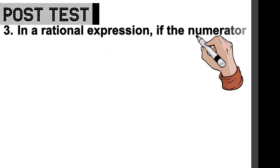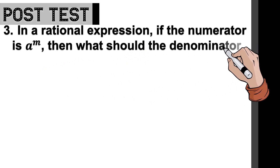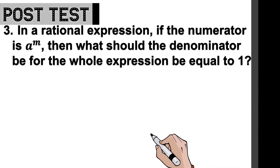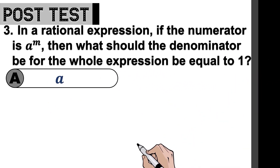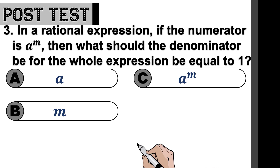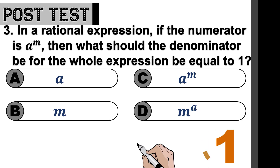Now on number three: In a rational expression, if the numerator is a to the power of m, then what should the denominator be for the whole expression to be equal to one? Is it A, a? B, m? C, a to the power of m? Or letter D, m to the power of a? Five seconds. Time is up.